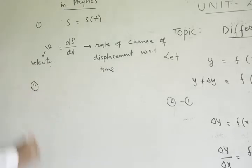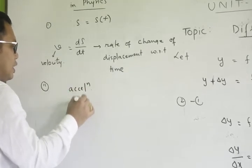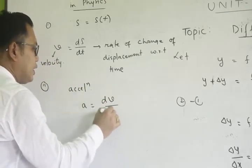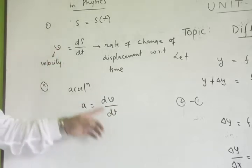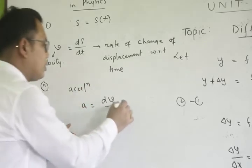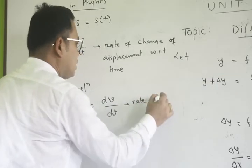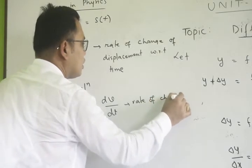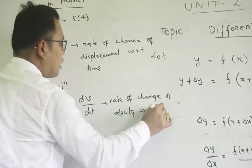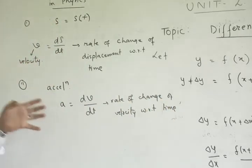Number 2: if you want to find acceleration, acceleration is a physical quantity. Acceleration is dv by dt. So the rate of change of velocity with respect to time gives acceleration. Every derivative has its own significance.